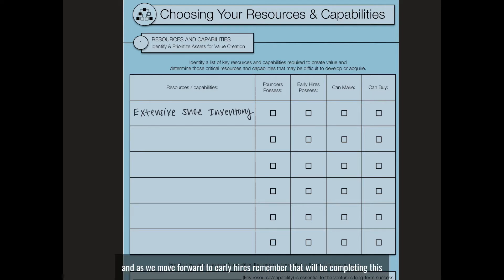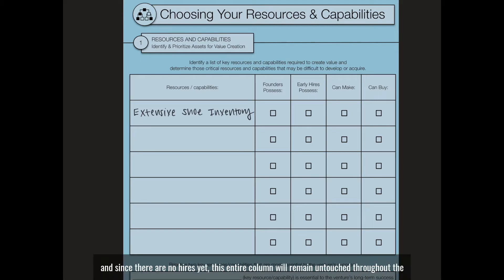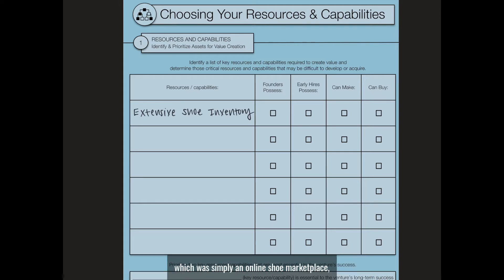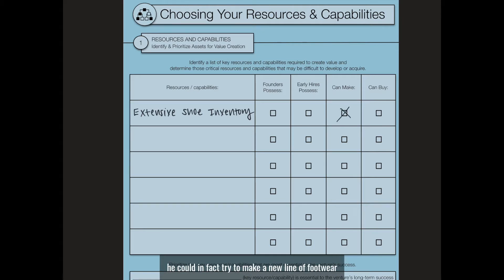As we move forward to early hires, remember that we'll be completing this exercise from Swinburne's perspective prior to recruiting anyone, and since there are no hires yet, this entire column will remain untouched throughout the exercise. Under the can-make column, if we consider Swinburne's early idea — simply an online shoe marketplace — we can note that although it may be difficult, he could in fact try to make a new line of footwear and sell that online. And an alternative to making these shoes would simply be purchasing them, so we can buy.